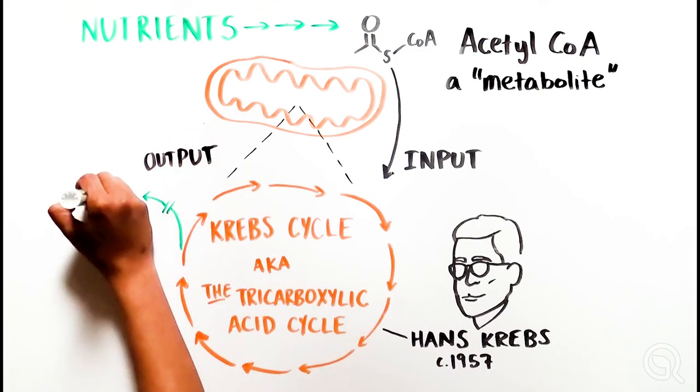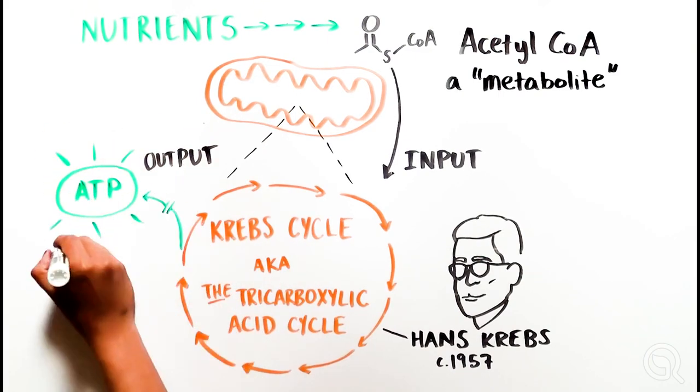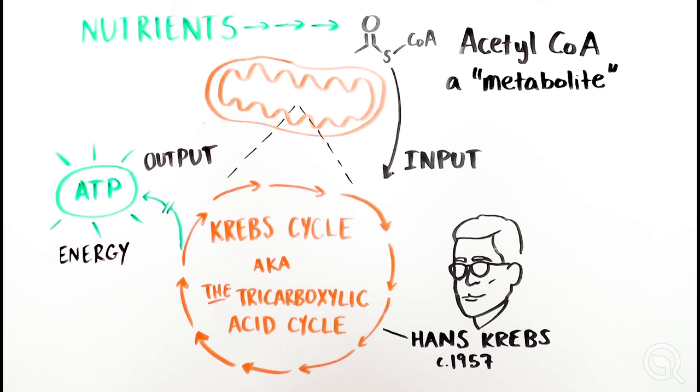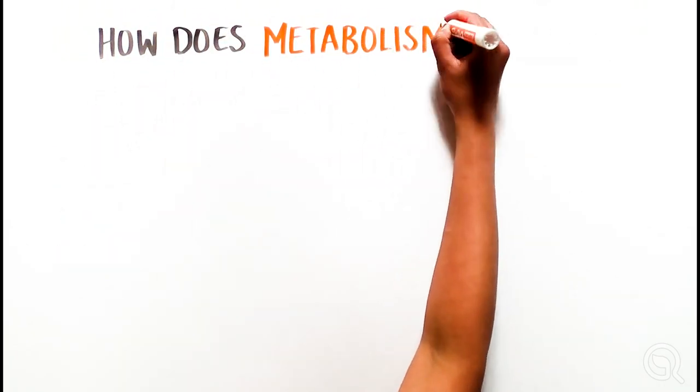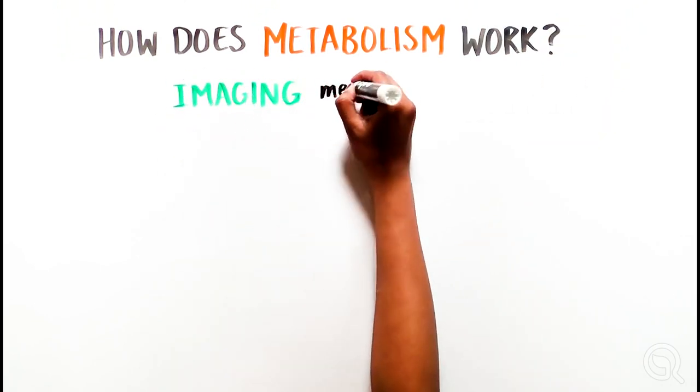The Krebs cycle uses acetyl-CoA to produce much of the ATP produced within the cell. Our knowledge of how metabolism works allows us to understand what happens when things go wrong, resulting in disease.